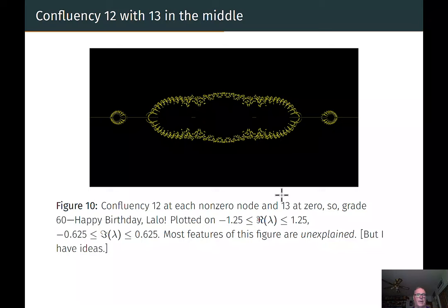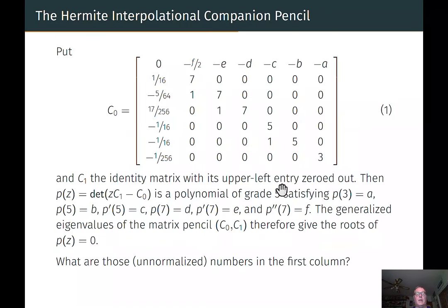So again, we're plotted on minus 1.25 less than the real part, less than 1.25, and minus 0.625 less than or equal to the imaginary part, less than or equal 0.625. And most of the features of this plot are unexplained. But I have some ideas.